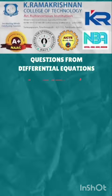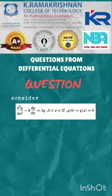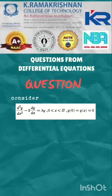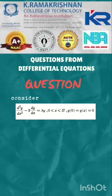Question from differential equations. Consider d squared y by dx squared minus 3 dy by dx is equal to lambda y, x is greater than 0 and less than pi, y of 0 is equal to y of pi is equal to 0.